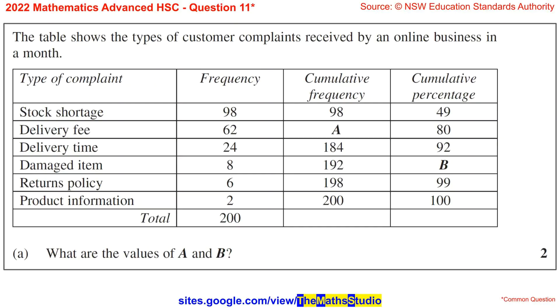Question 11. The table shows the types of customer complaints received by an online business in a month. Part A: What are the values of A and B?